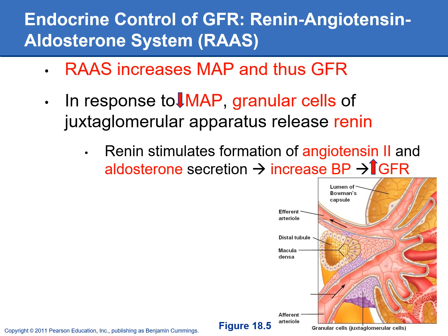The last mechanism regulating GFR is the endocrine system through RAS — the renin-angiotensin-aldosterone system. When you stimulate RAS, it increases blood pressure, which increases pressure in the glomeruli and brings GFR back up to normal. When blood pressure gets too low, the granular cells — the purple cells wrapped around the afferent arteriole — secrete renin, which stimulates the formation of angiotensin II and then aldosterone secretion. Those two hormones increase blood pressure and bring GFR back to normal. RAS will be discussed more later.